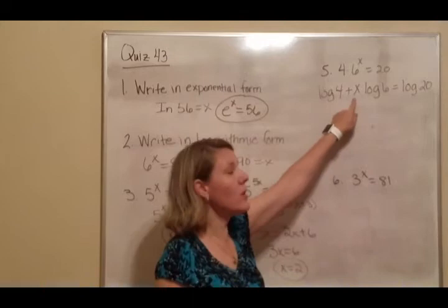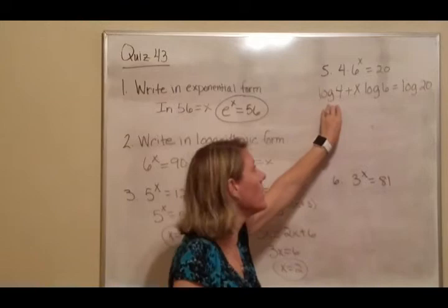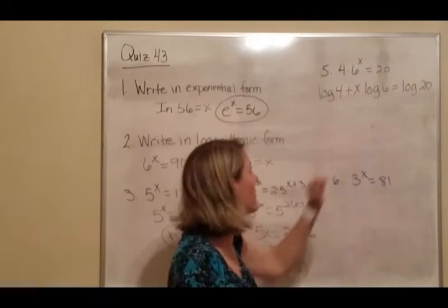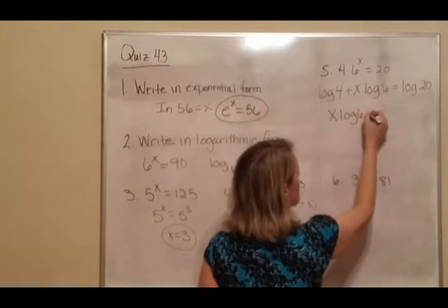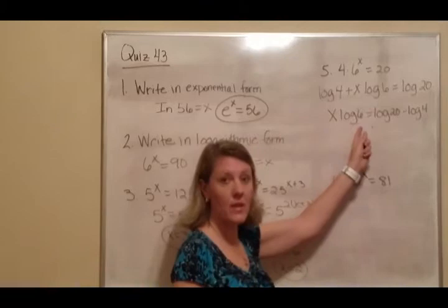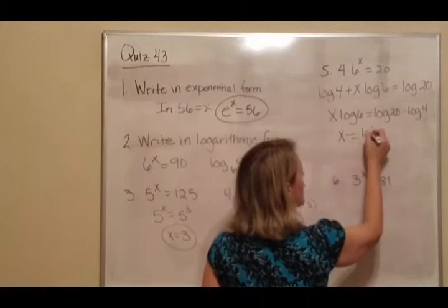So we're trying to get x by itself, so the things that's bothering it is a log 4 and a log 6. So we're going to move this because it's put together by addition, so we need to subtract from both sides. So when we subtract, we have x log 6 equals log 20 minus log 4. Now what's bothering it is a log 6. It's together by multiplication, so we divide.